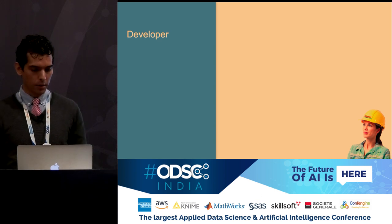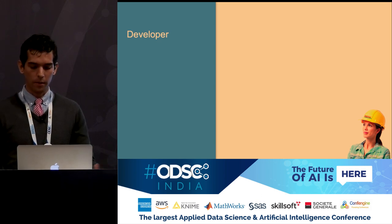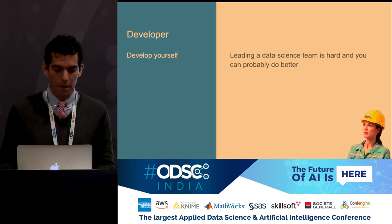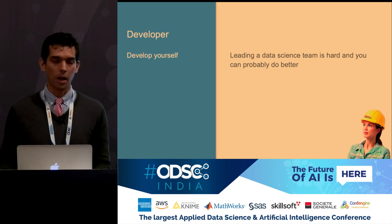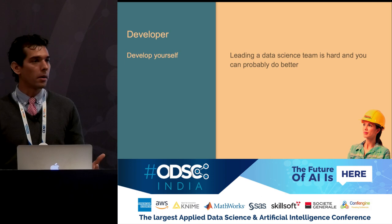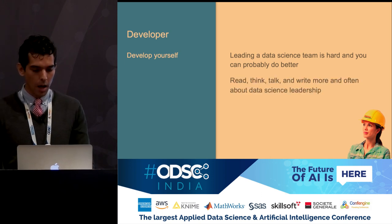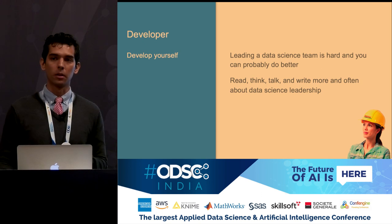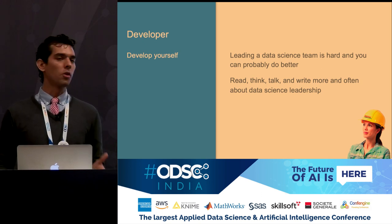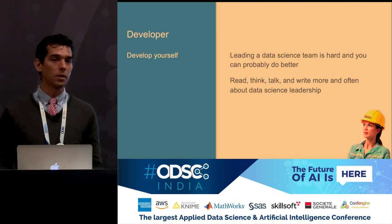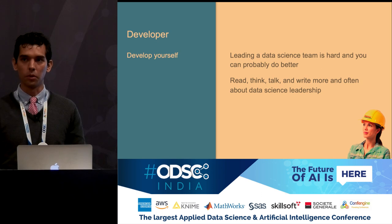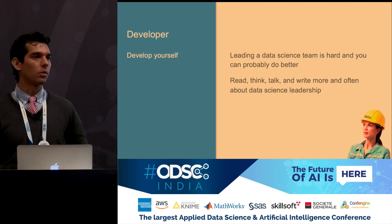The final hat a data science leader has to wear is that of a developer. You have to develop a few different things. First, you have to develop yourself. Leading a data science team is very difficult — you probably haven't been trained as a data science manager, and you can probably do better. It's important for data science leaders to read, think, talk, and write more about what data science leadership is and how they themselves can grow. If your manager was a data scientist in a past life, that's a great person to learn from. But in smaller companies where you don't have access to that resource, it's useful to find mentors and external research on data science leadership.